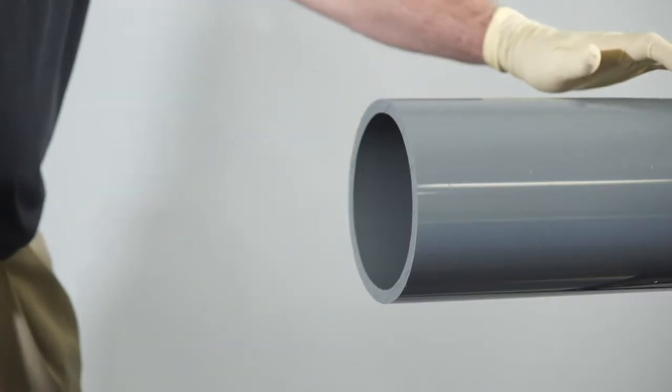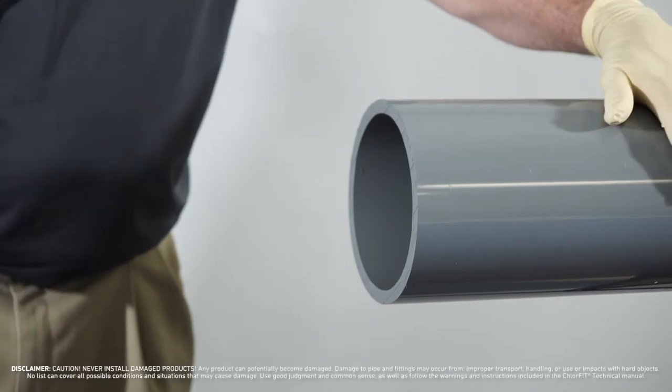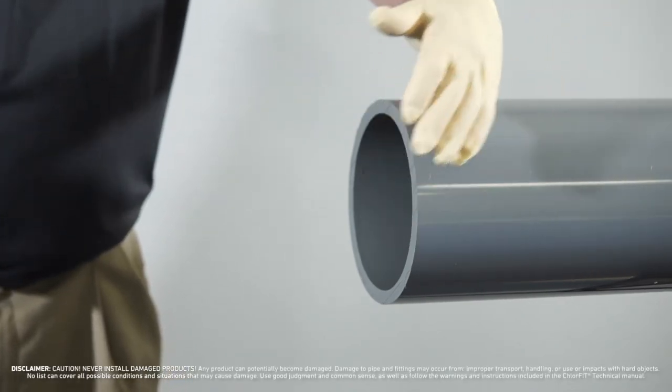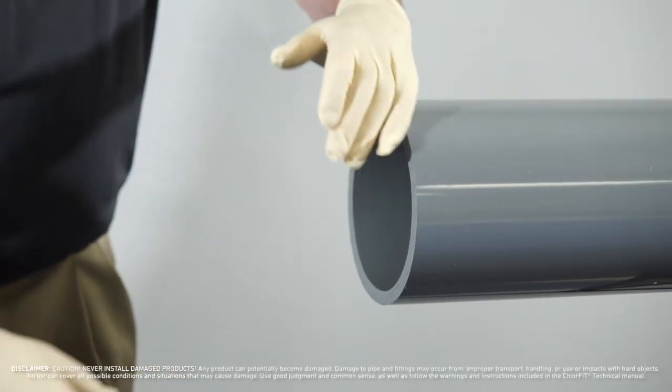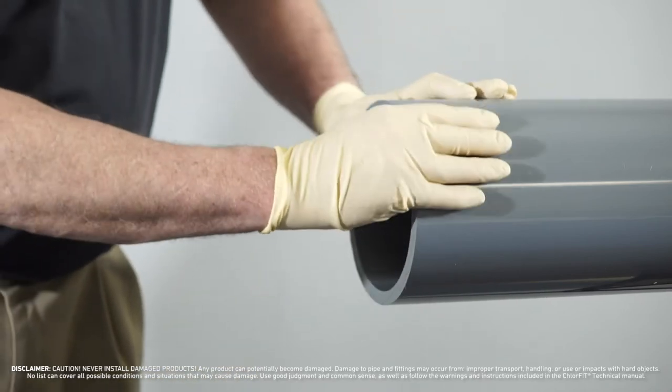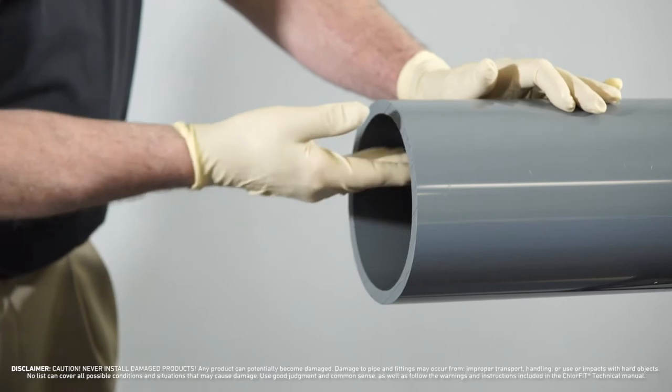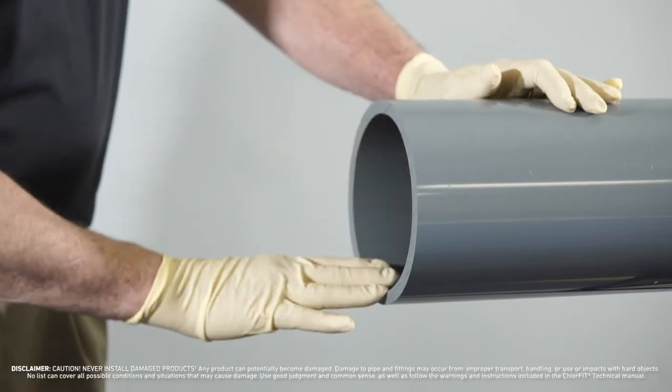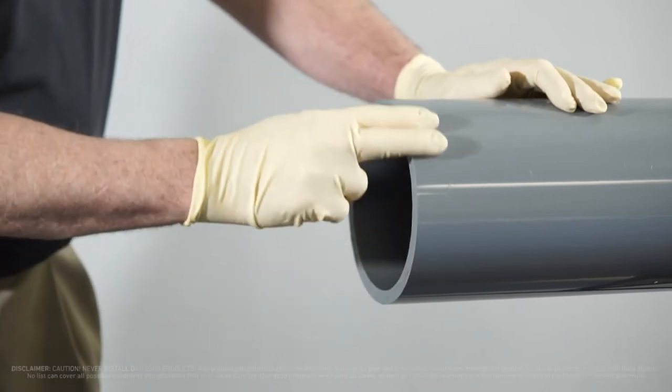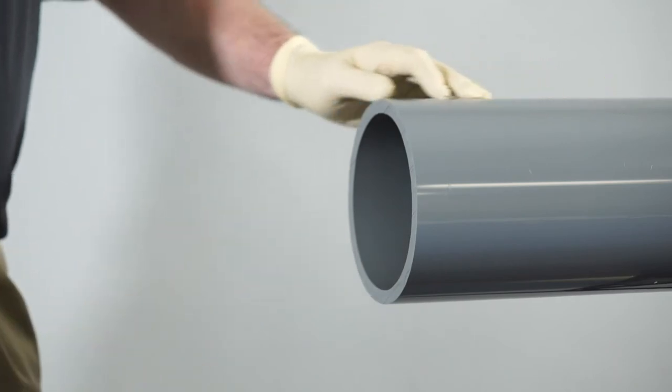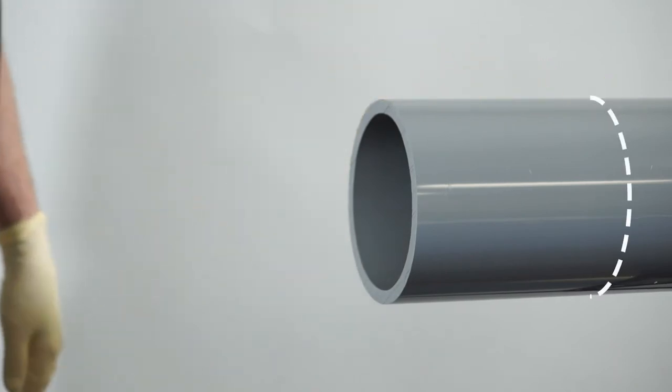Before installation, carefully inspect each length of pipe and fittings for damage. Run your fingertips around the pipe, feeling and looking closely for nicks, cracks, splints, dents, or other marks that could indicate the pipe has been damaged. If the pipe or fitting is damaged, discard the damaged product or cut off six inches of pipe beyond the cracked area.